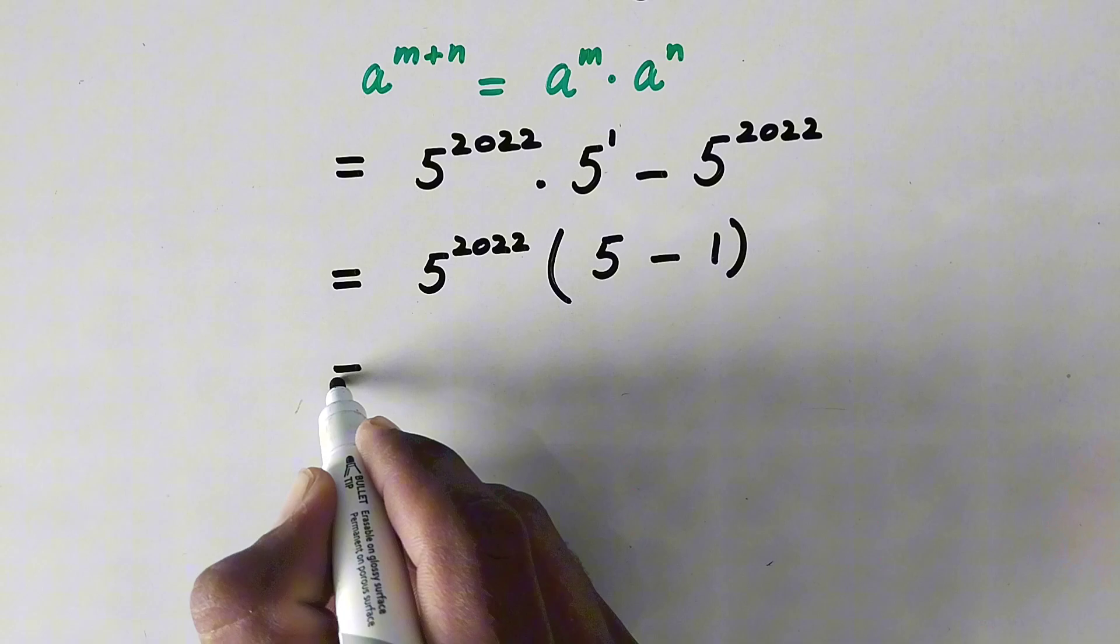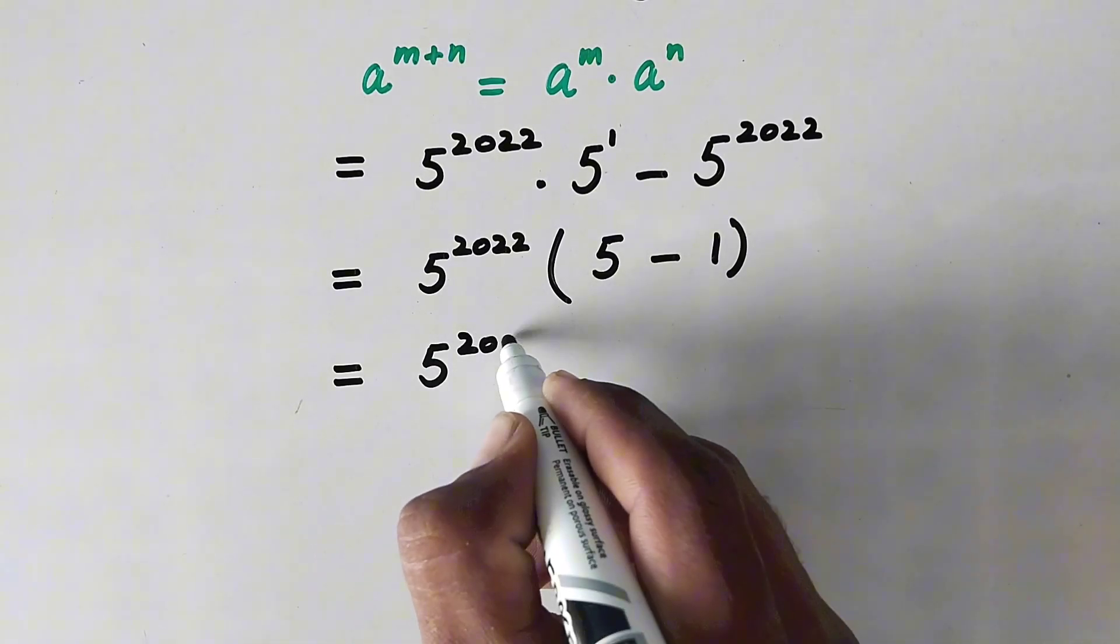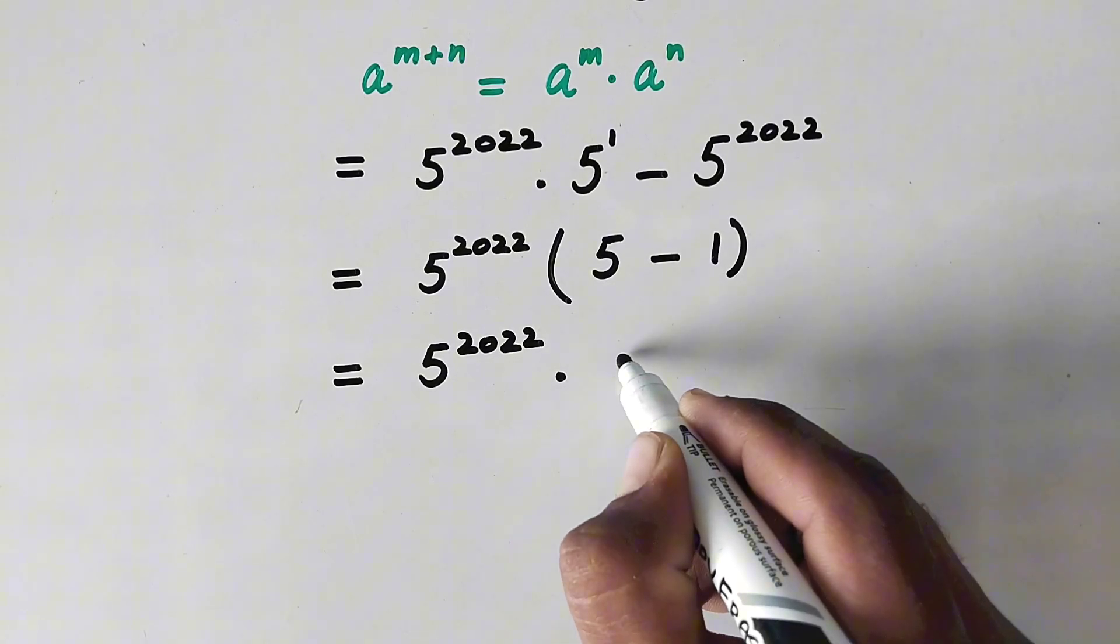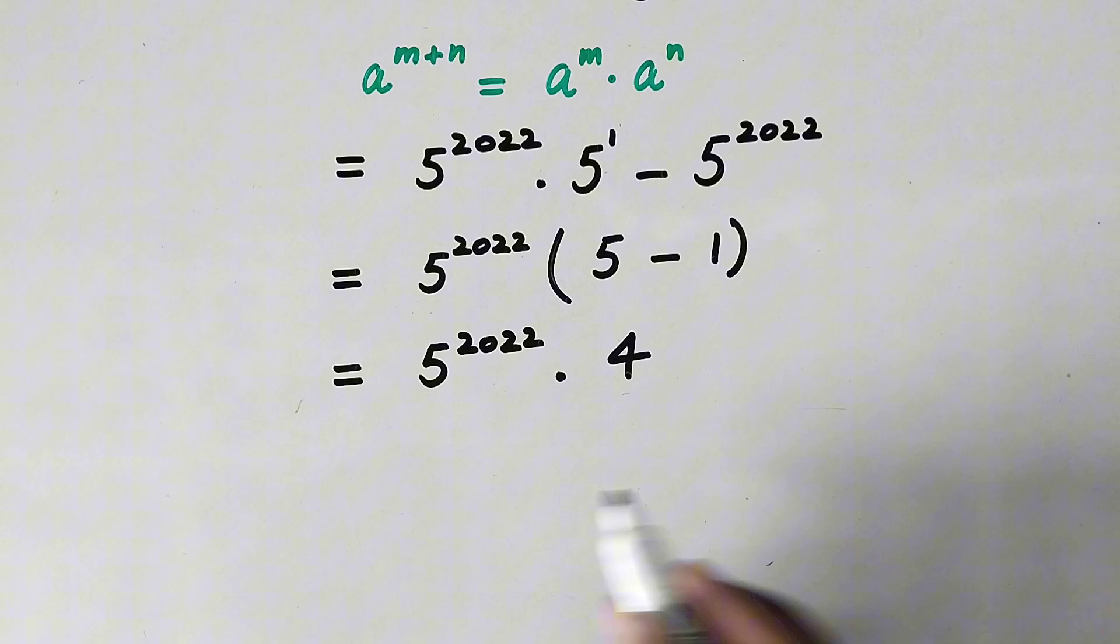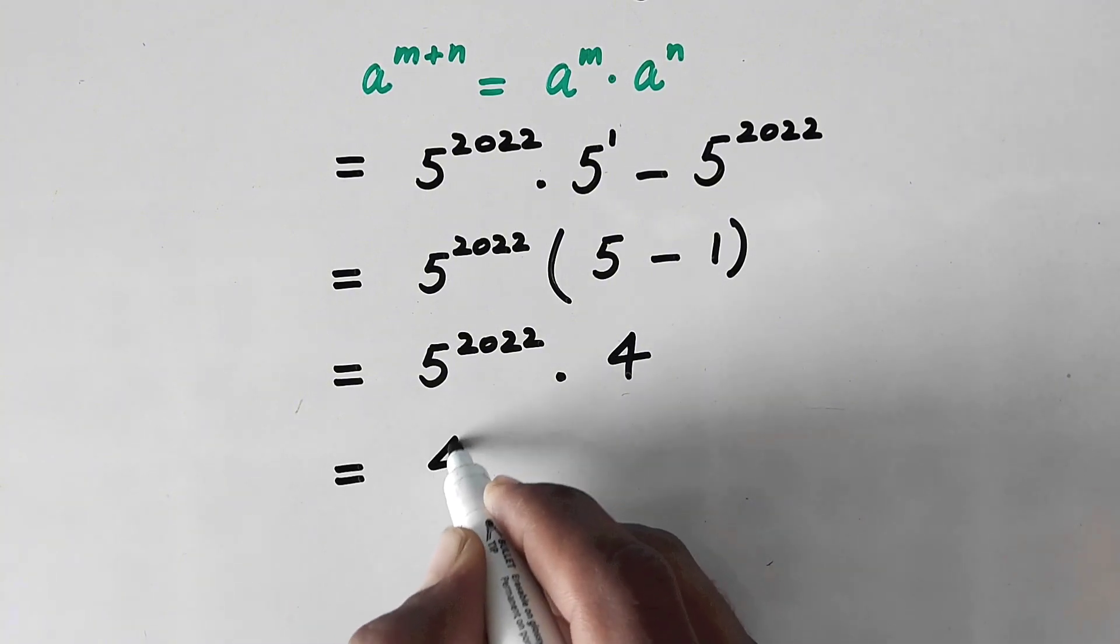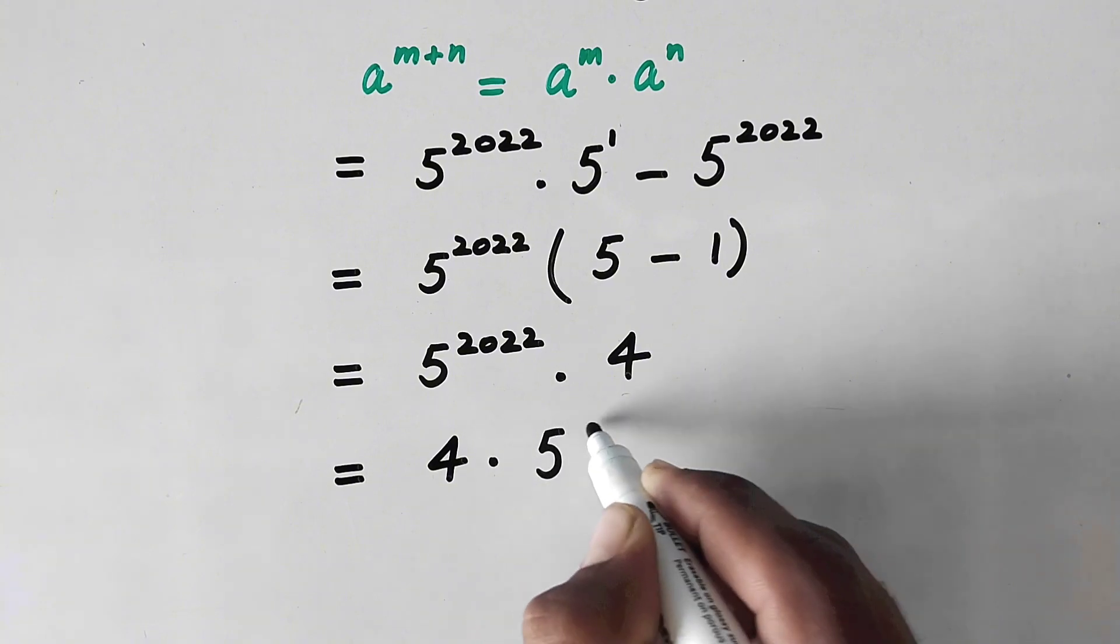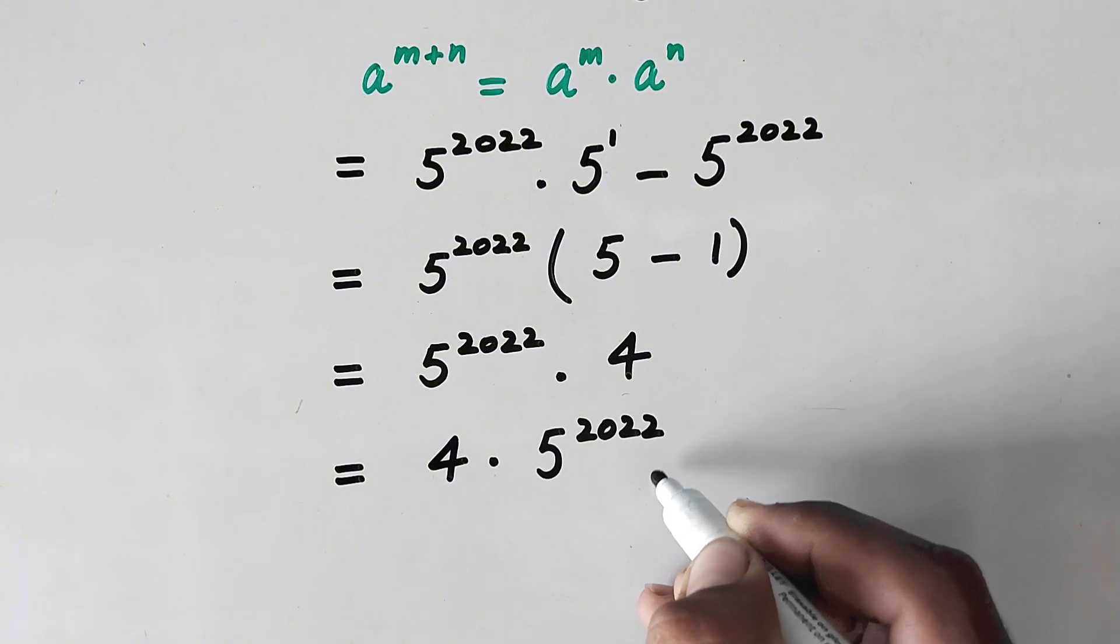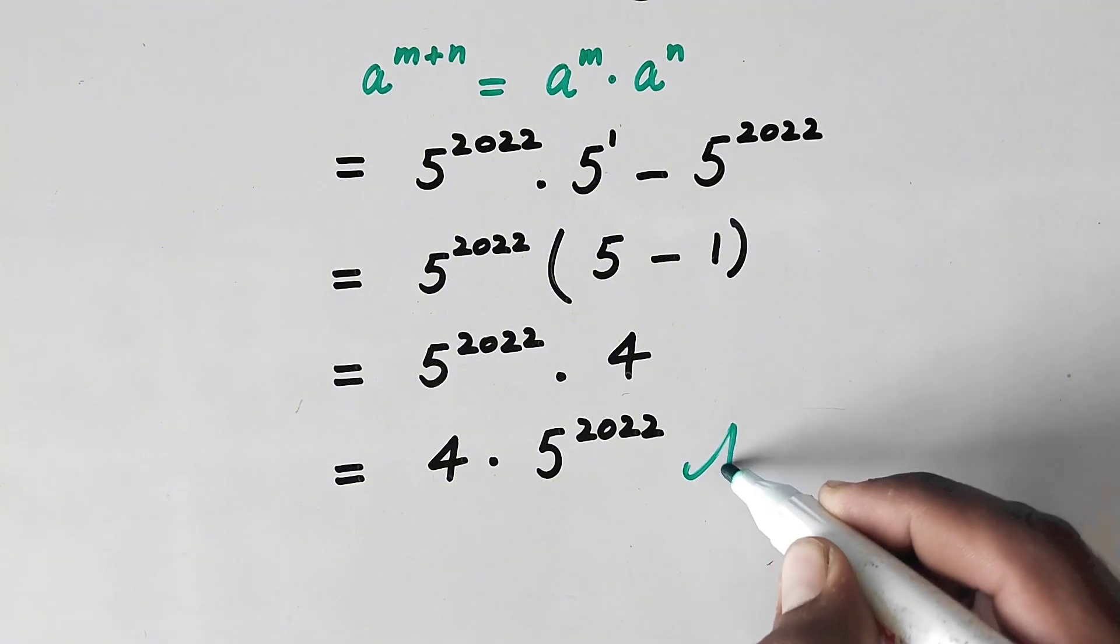This will be equal to 5 raised power 2022 times here 5 minus 1 is equal to 4, or we will write it in this way: 4 times 5 raised power 2022, and that is our final answer.